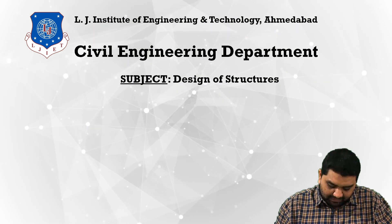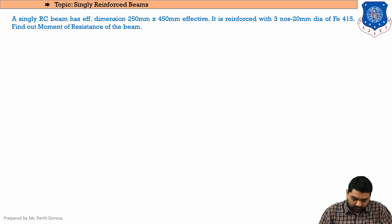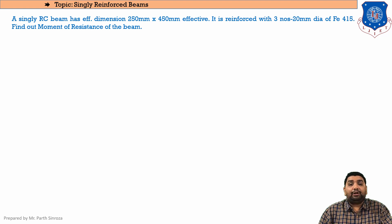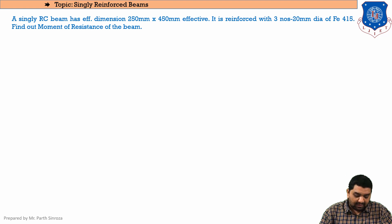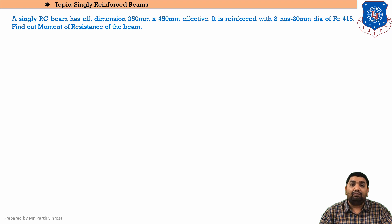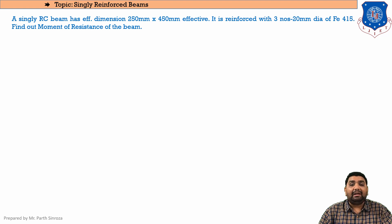Our today's question: a singly RC beam has effective dimensions. Keep in mind there are two types of depth we will be dealing with. The first is the overall depth, that is capital D, and the second is the effective depth, that is small d. Here it is mentioned as effective dimension, meaning small d is given as 250 mm × 450 mm. The first dimension will always be the width, that is 250 mm, and the second dimension will be our effective depth, small d, that is 450 mm.